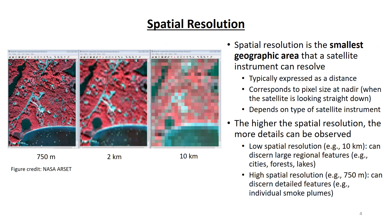Spatial resolution is a satellite term that refers to the smallest geographic area that a satellite sensor can resolve. It is typically expressed as a distance. It corresponds to the pixel size at nadir, when the satellite is looking straight down at the Earth's surface, and it depends on the specifications of the satellite sensor. The higher the spatial resolution, the smaller the distance value, the more details that can be observed by the satellite, as illustrated by the graphic.